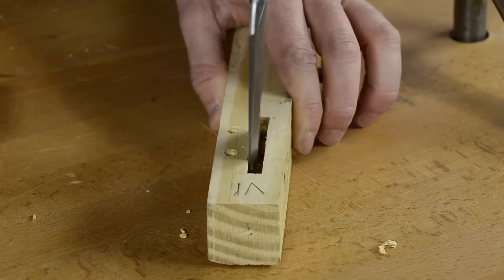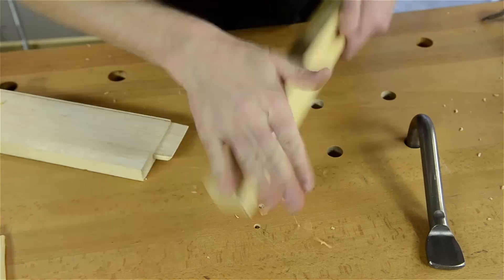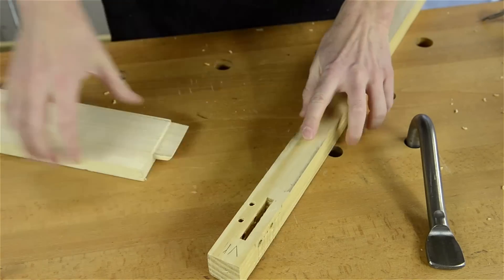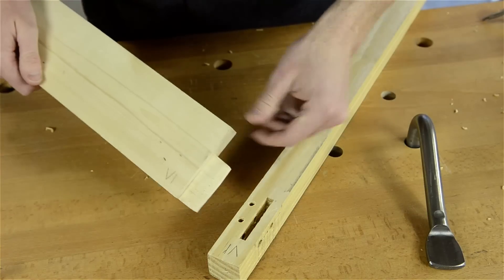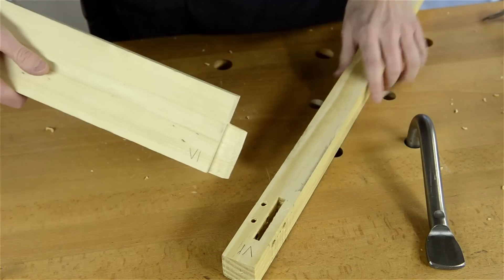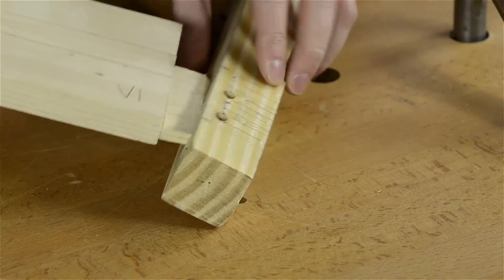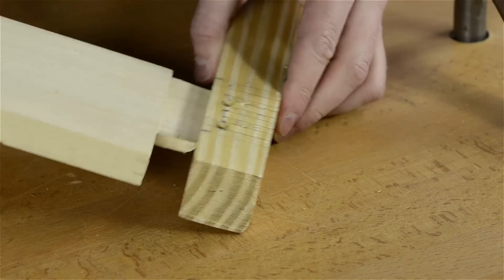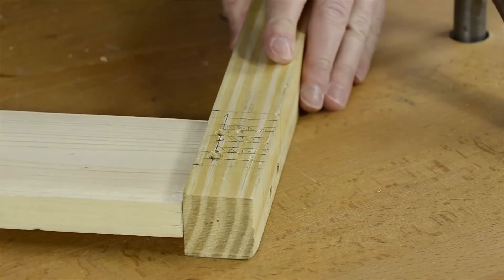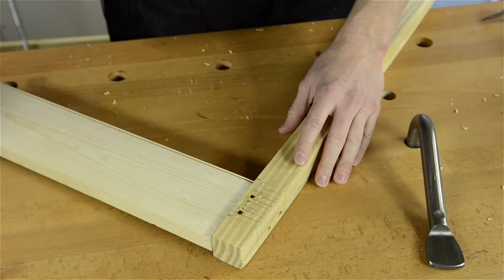All right, here we go. Make sure that I'm lining up the right Roman numerals again. That's upside down, but it's six. There we go. Okay, so now this is the fun part.